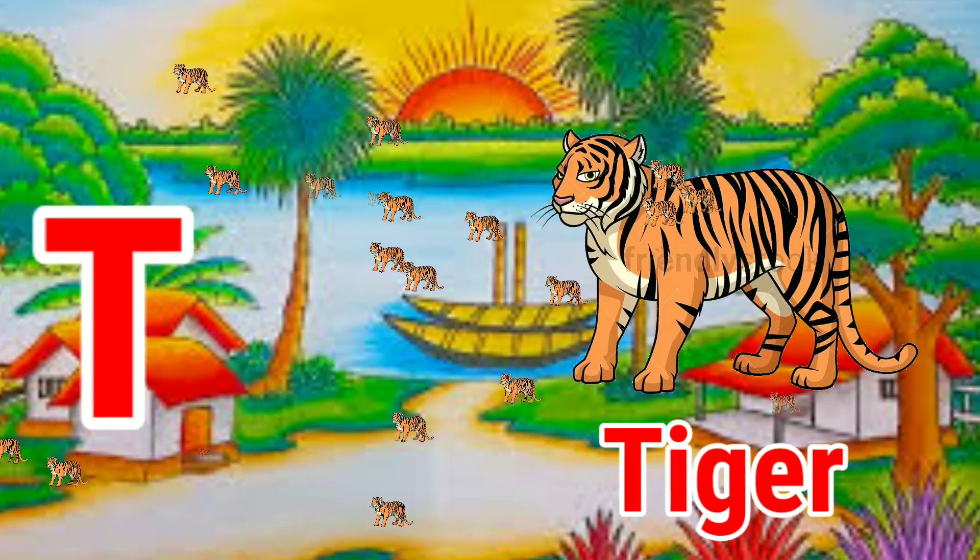T for tiger. U for umbrella. V for white. W for white. X for x-ray. Y for rake.